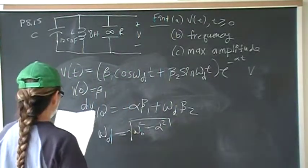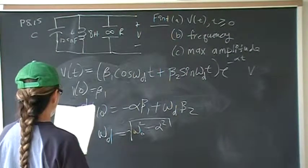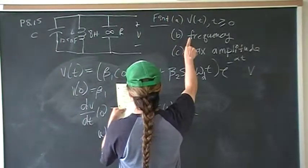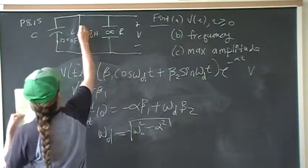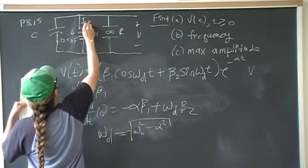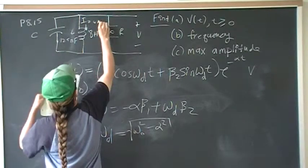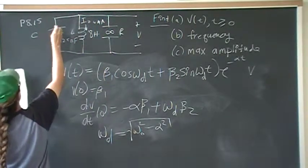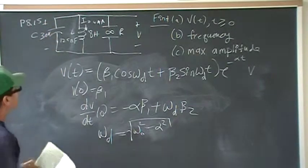So I forgot to put here, but the initial conditions: we have some initial information. I forgot to list here that we're given current through the, the initial current through the inductor is 6 milliamps. We're also given the initial voltage across the capacitor is 30 volts. So we need that information.